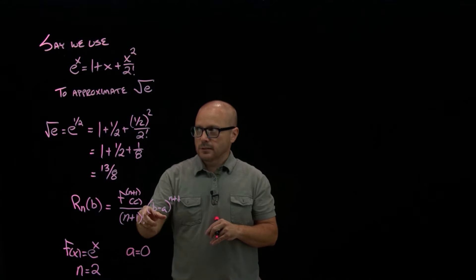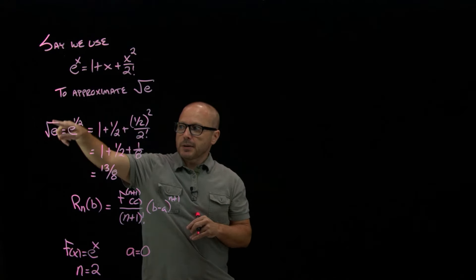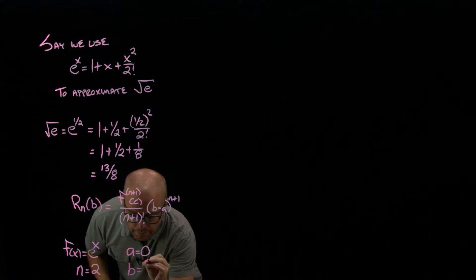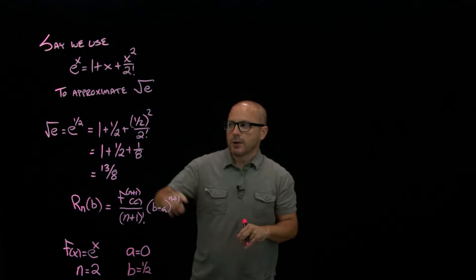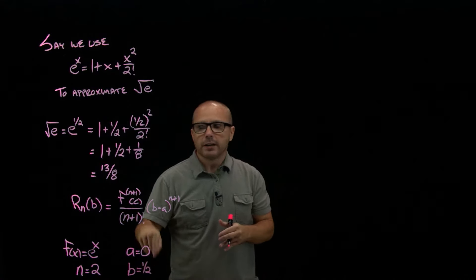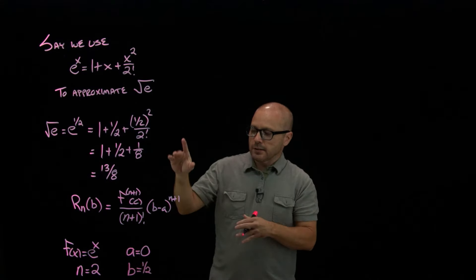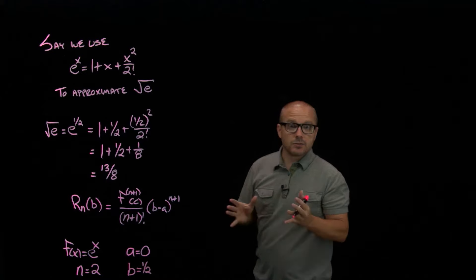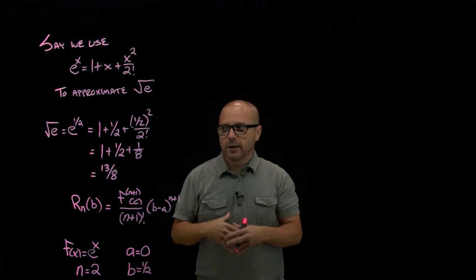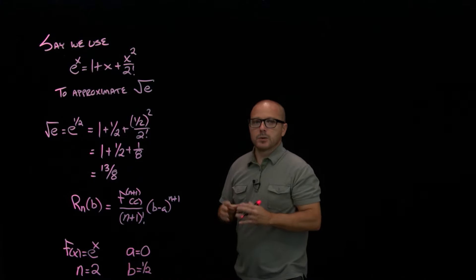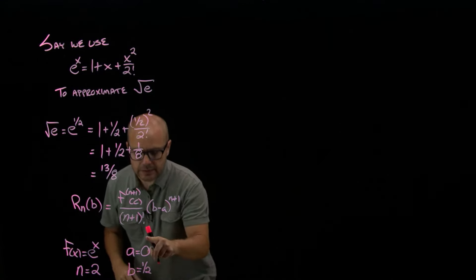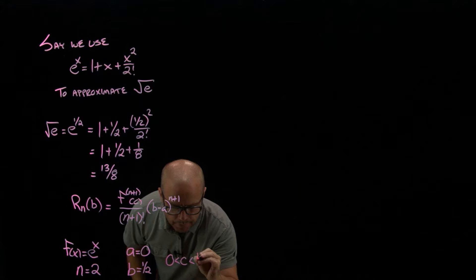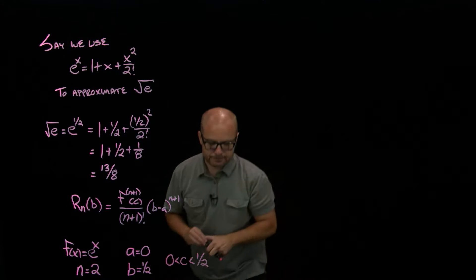B is where you'd like to use it. Well, where are we attempting to use this approximation? At x equal 1 half. So b, in this case, is 1 half. If we were trying to find e to the fifth power, then b would be 5. Whatever power of e we're trying to find here, because that's what we're plugging in for x, that's our b. And then lastly, remember that c is the mystery value. If we knew c, we could just calculate the error and there would be no error. But the best we can do is bound it. And what Taylor's theorem tells us is that c is somewhere between a and b. So all we know about c is that it's somewhere between 0 and a half.